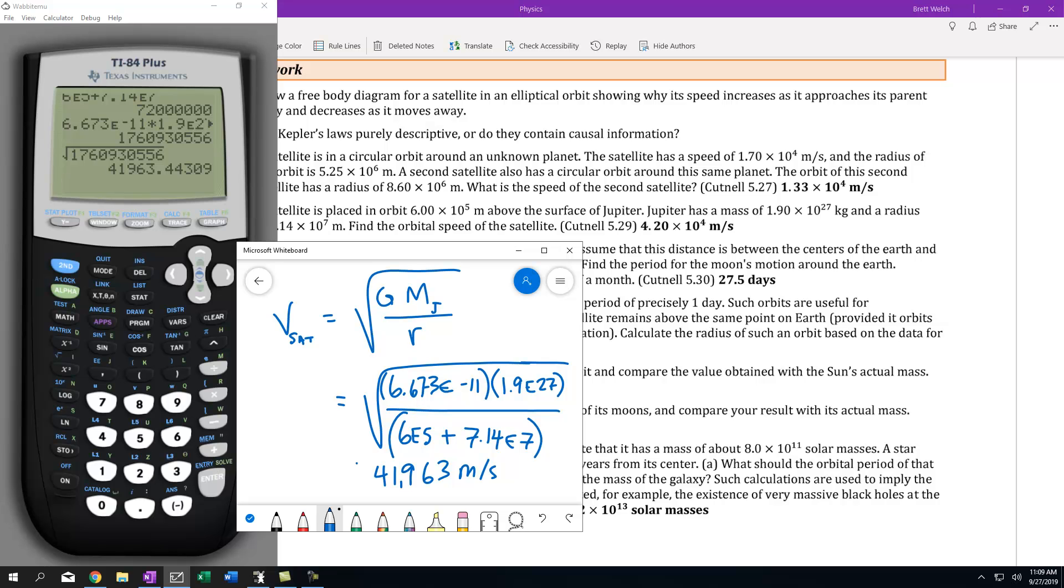Now, for significant figures, if you look at those numbers, they were 3 sig figs, which means I'd have to cut it right there. The 6 is going to kick the 9 to a 10, which turns this into 42,000 meters per second. That's how fast a satellite would have to be going to orbit Jupiter at this specific height. And you'll notice they write it as 4.2 times 10^4.